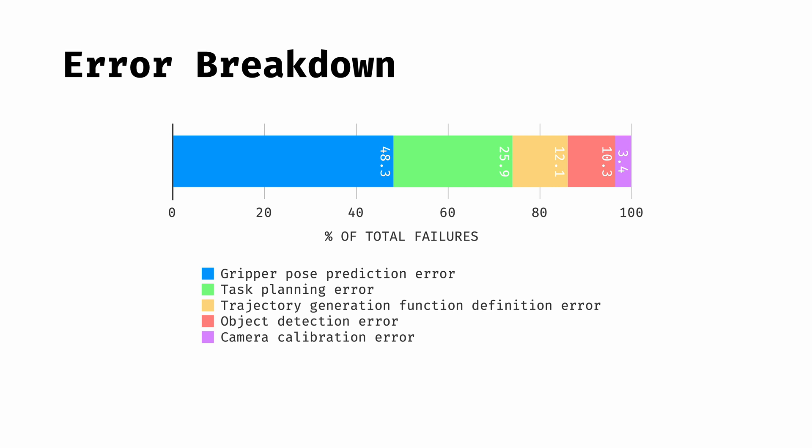To provide an insight into the main failure modes of the main prompt on the 30 manipulation tasks, we group the errors into five categories. Gripper goal pose prediction error, high level task planning error, wrongly coding the trajectory generation function definition, object detection error by the vision model, and camera calibration error due to noisy camera data. We can see here that nearly half of the failure cases can be attributed to the more difficult task of predicting accurate gripper poses, compared to high level task planning or coding trajectory generation functions.